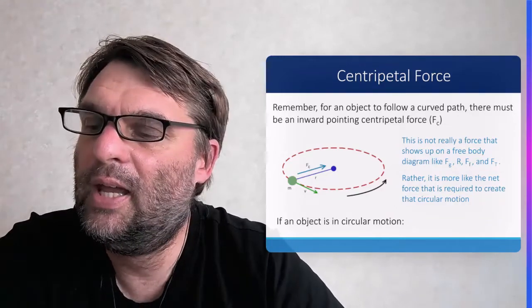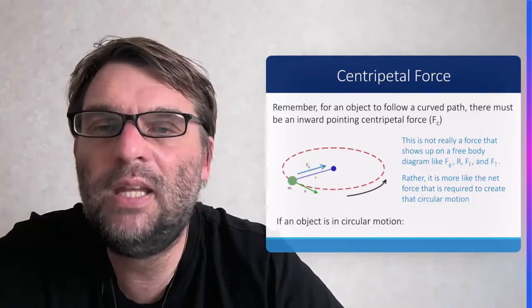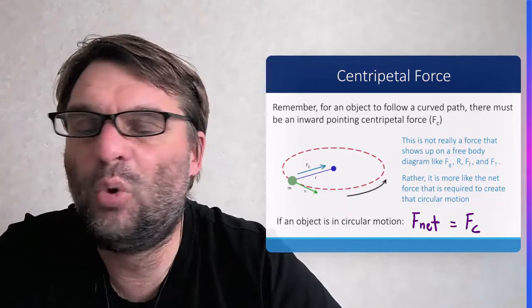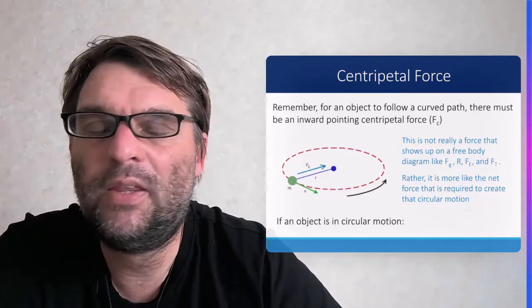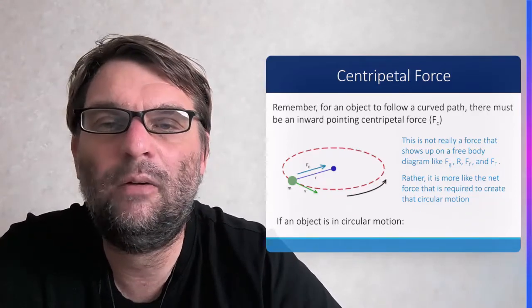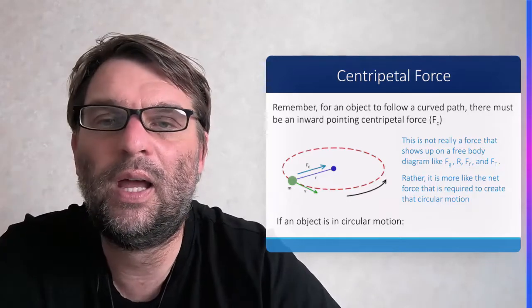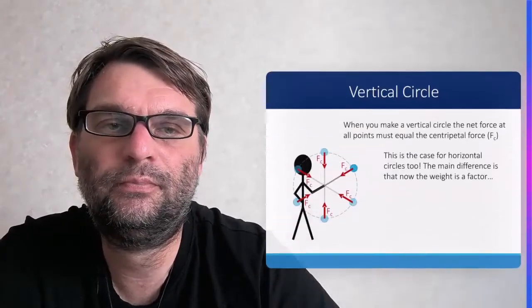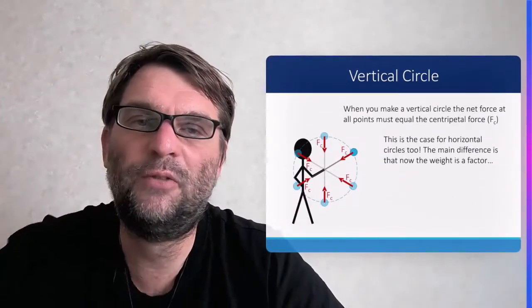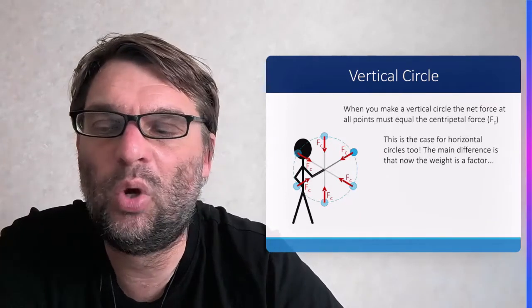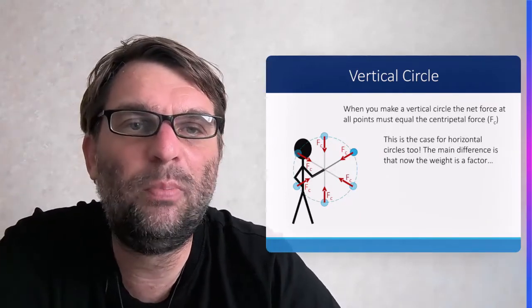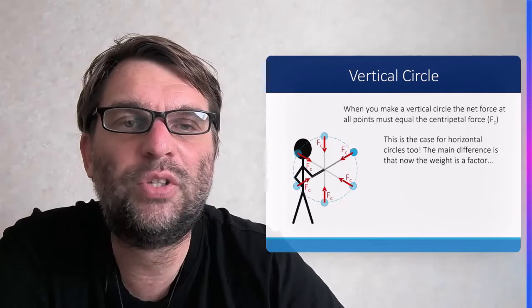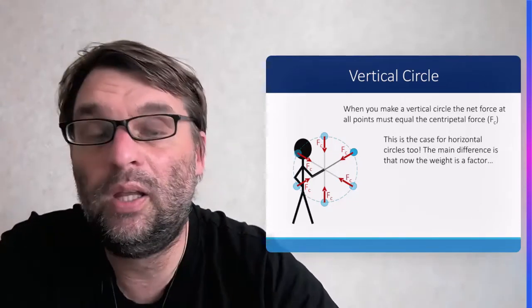If an object is in circular motion, the net force has to equal the centripetal force, which we explored in the last lesson. When you make a vertical circle, the net force at all points must equal the centripetal force, otherwise it won't move in circular motion.